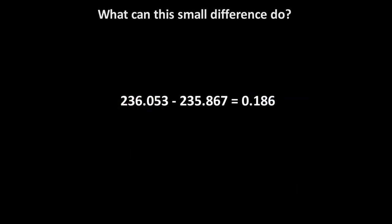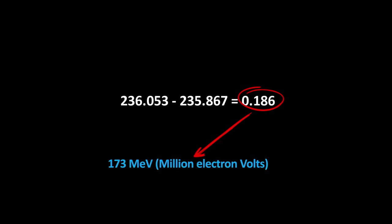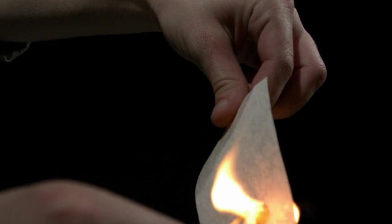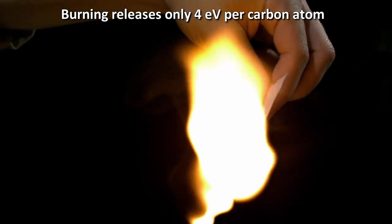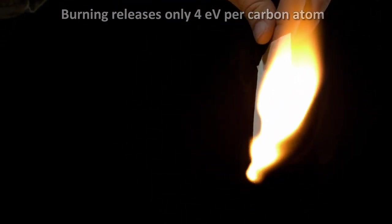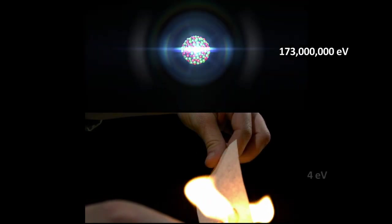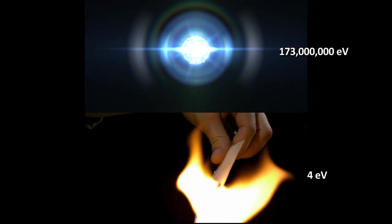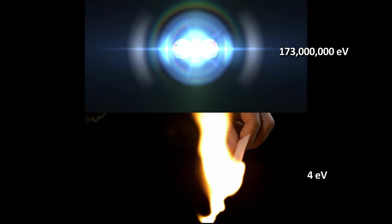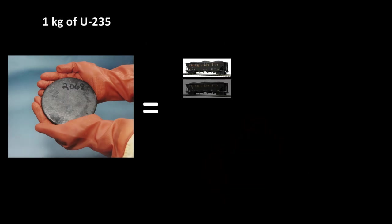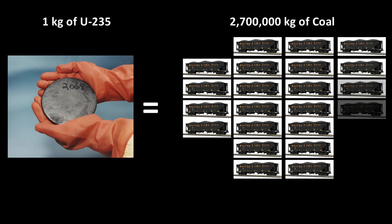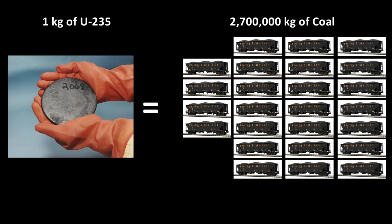But you might say, what can a difference of just 0.186 atomic mass units make? The answer is a lot. It's around 173 million electron volts or MeV. For comparison, when you burn paper or a fossil fuel, each carbon atom consumed in the burning releases around 4 electron volts. In general, one kilogram of uranium-235 corresponds to about 2.7 million kilograms of coal equivalent, depending on equipment and type of coal.